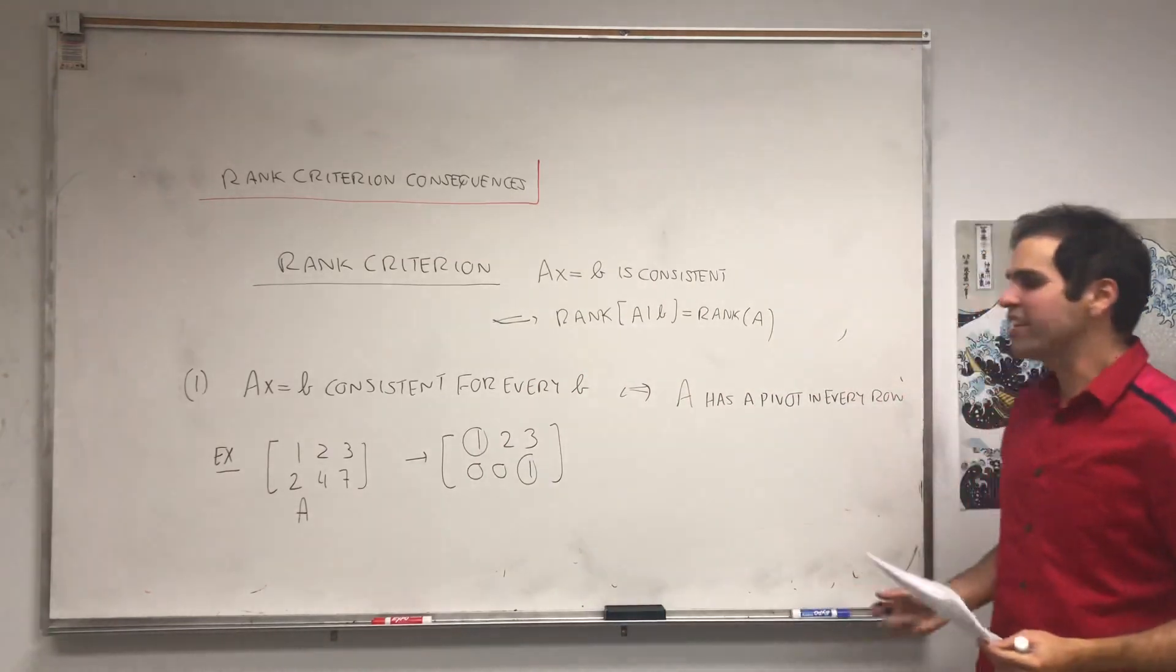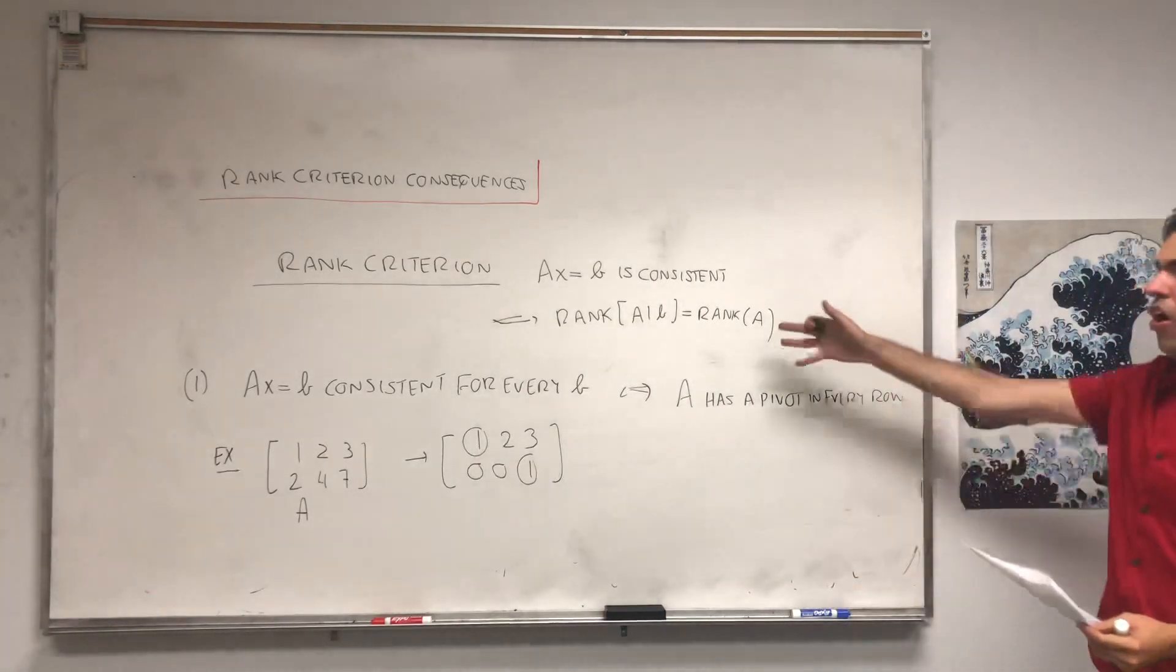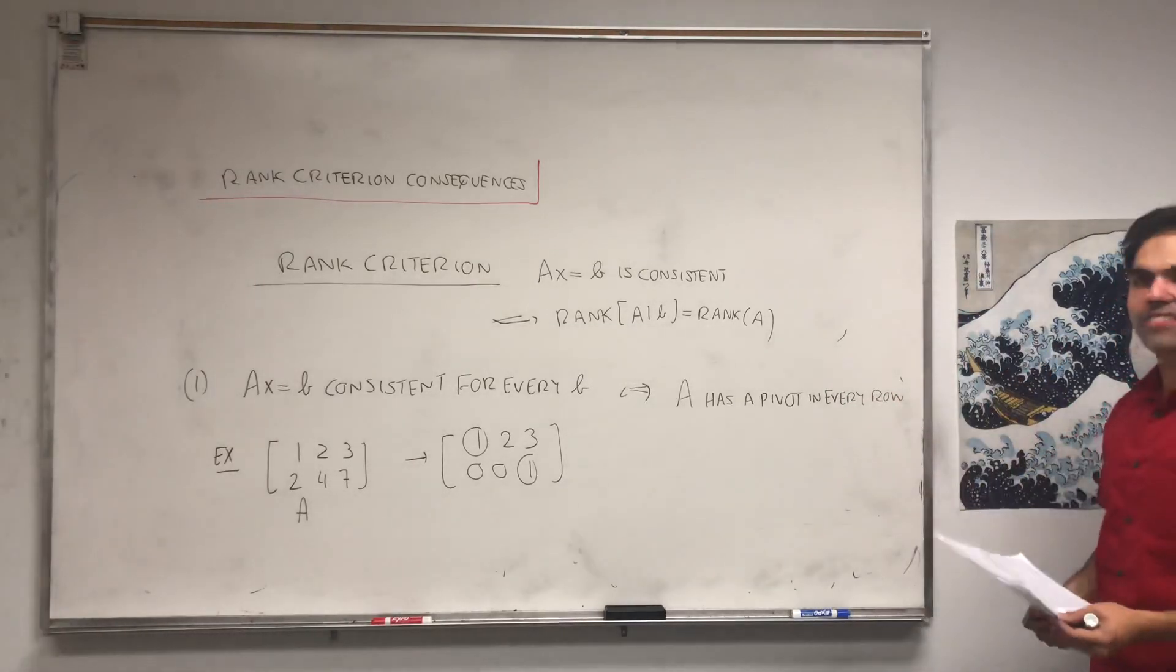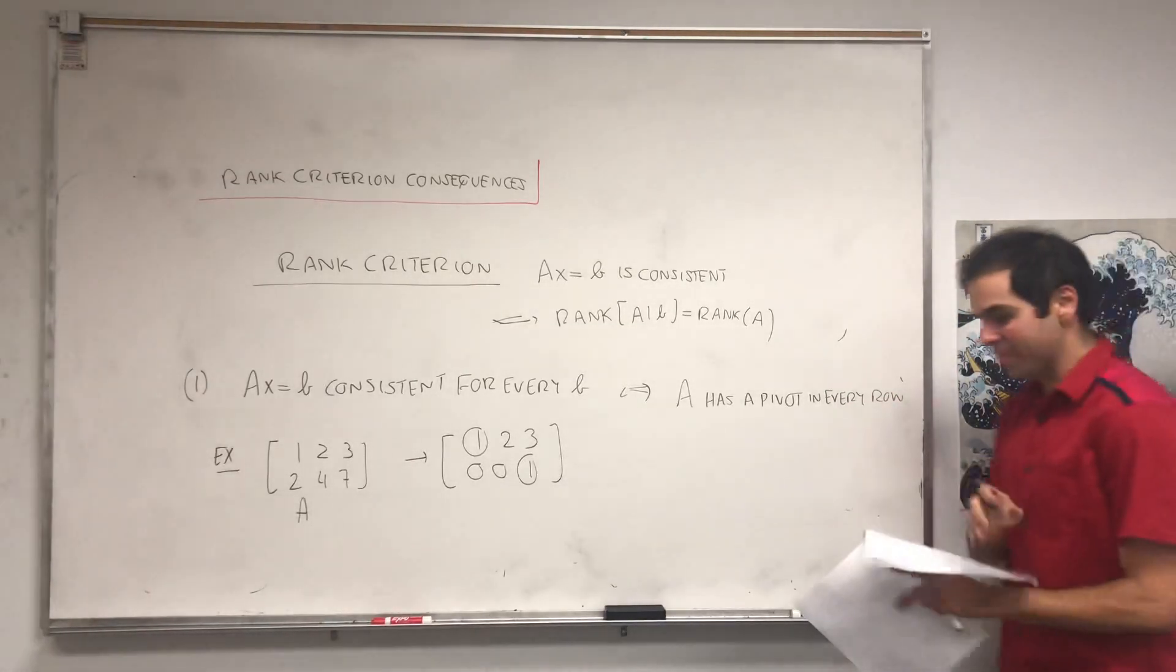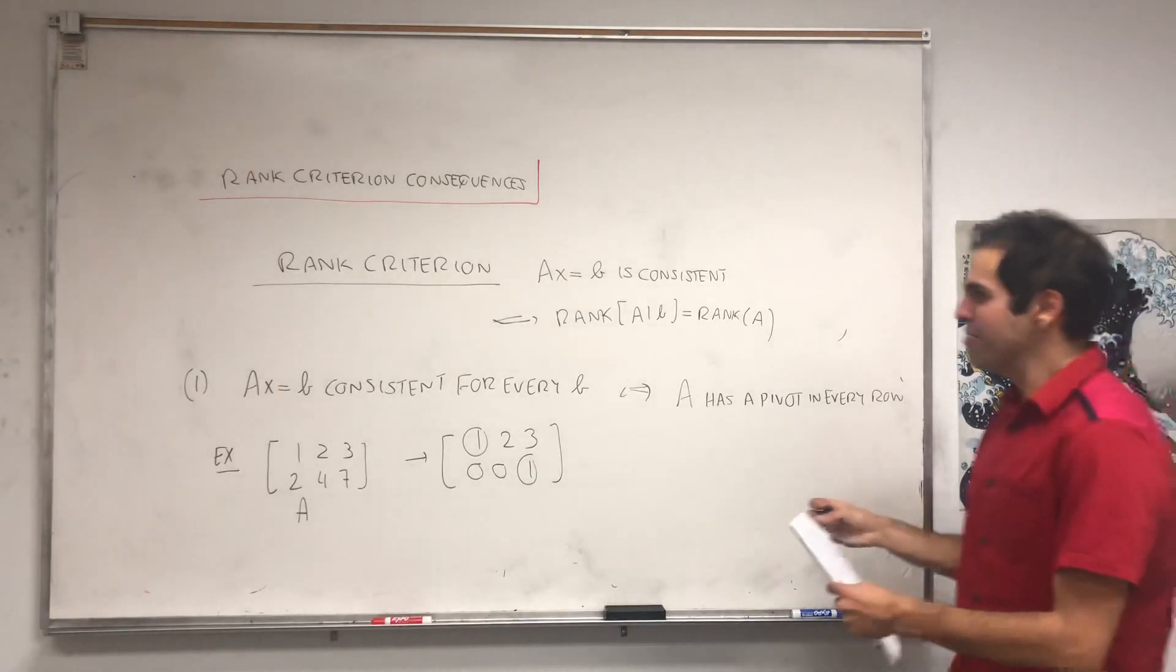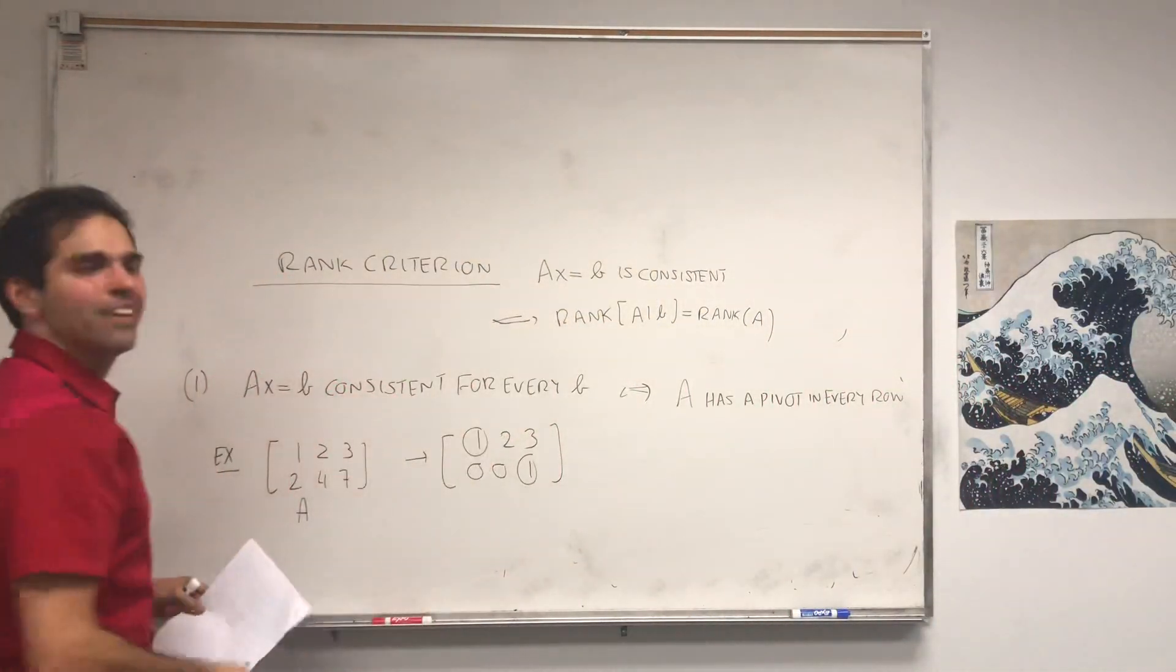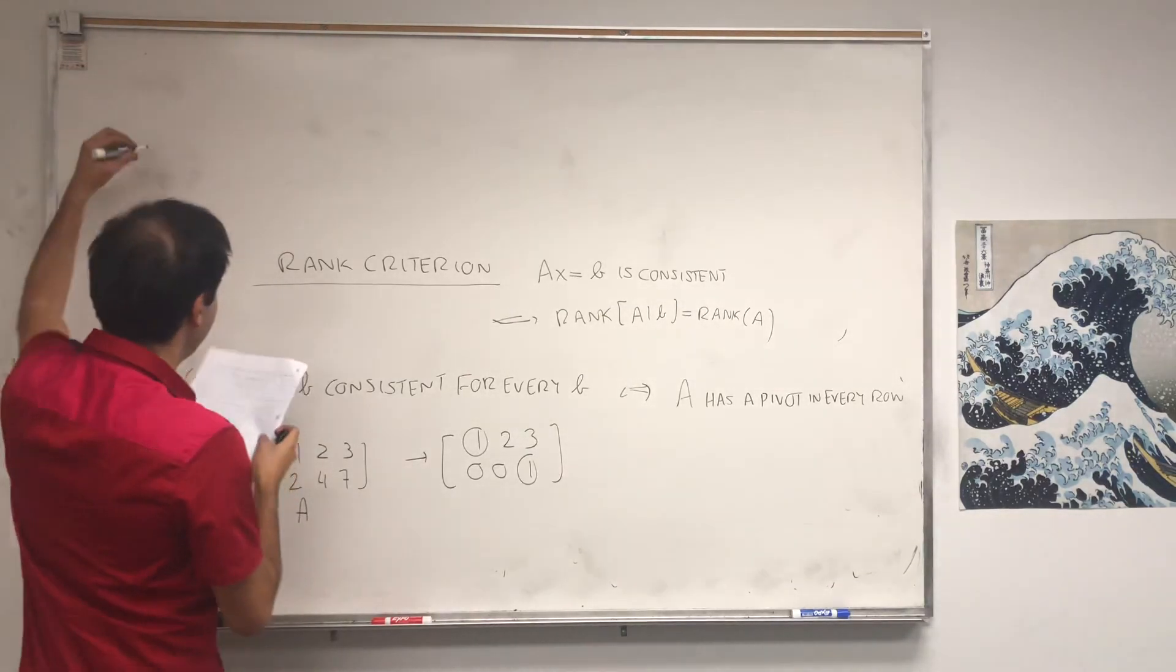Notice there's a pivot in every row of A, so already you can tell me no matter which B you choose, AX equals B is always consistent. Alright, and let me prove this, it's not too complicated if you know that criterion, so why?